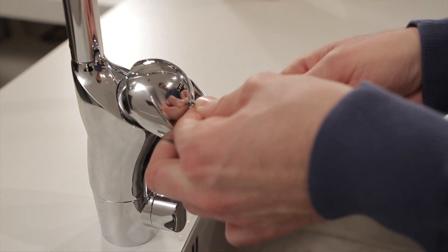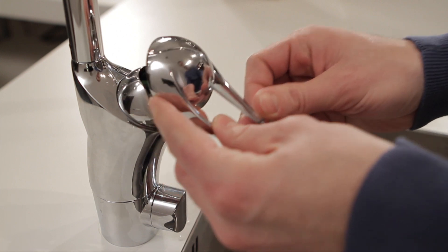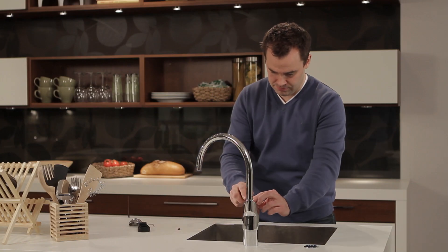Carefully loosen the screw using a 2.5 mm Allen key. Lift the lever and gently prise off the cover cap from the inside.